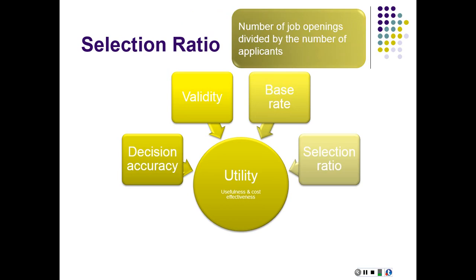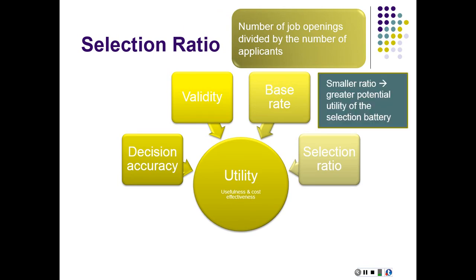Selection ratio refers to the number of job openings that we have divided by the total number of applicants. The smaller the ratio, the greater the potential utility of the selection battery. What we're talking about with a smaller ratio: if you have one job and two applicants, your selection battery probably isn't going to really matter. If you have to pick one of those two people, it's sort of like, well, I guess we'll just pick one. If you have a smaller ratio where you have one job and 20 applicants for the job, all of a sudden, a battery might make good sense because you've got all these people, all this interest, and you've got to figure out among all these people how am I going to figure out who's the best match. So the smaller the ratio, the greater the potential that this battery may really help you to sort through the applicants.